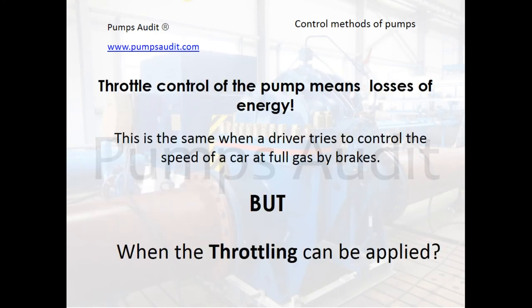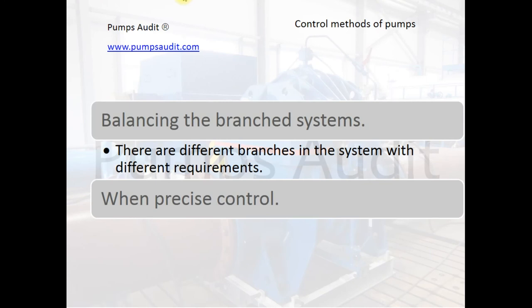Sometimes throttling can be the only solution for rescuing a pump and an electric motor. It is clear that throttle control means energy losses — it is the same as a driver trying to control the speed of a car at full throttle using the brakes. However, throttling can help pump users avoid more serious problems. There may be other situations where throttling can be applied, for example for balancing branch systems when there are different branches with different requirements, or when precise control is necessary.